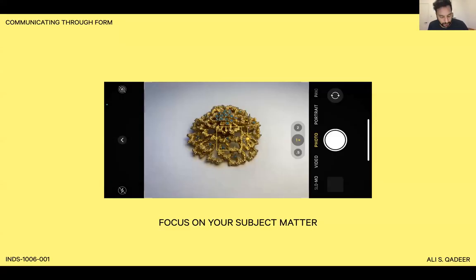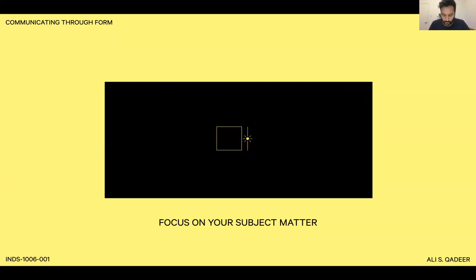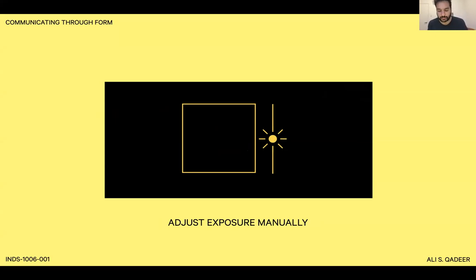Firstly, make sure that you focus on your subject matter. Tap on the area that you want to be in focus and your camera will do its best to prioritize the focus and exposure of that particular element. Furthermore, adjusting the slider to the right will allow you to adjust the exposure to something brighter or darker depending on your own preferences.